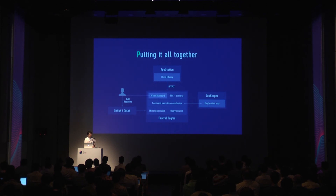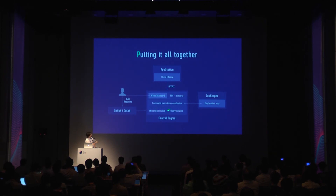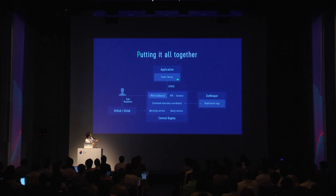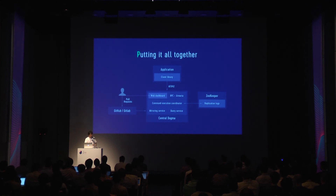All the core features of Central Dogma can be summarized into a single diagram in this slide. In the center there's Central Dogma, made of various subsystems implementing the features we've explained. There's also ZooKeeper keeping the replication log, a developer who sends a pull request for configuration changes, and a mirroring service that merges it. Applications use Armeria to connect to Central Dogma via HTTP/2 and do not access GitHub or GitLab directly. It fits really well with the modern software configuration management workflow.